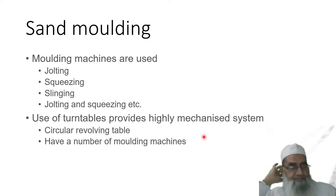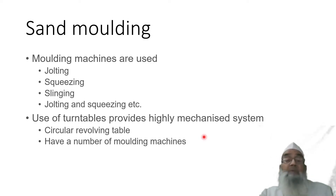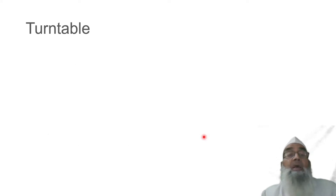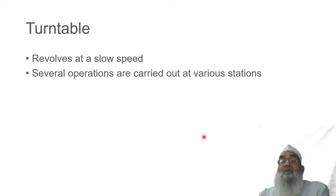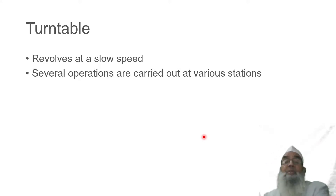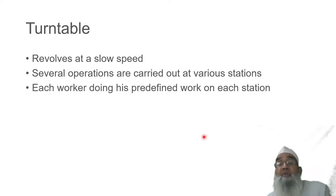The use of a turntable provides a highly mechanized system. A turntable is a circular revolving table with a number of moulding machines. The turntable revolves at a slow speed and several operators carry out various predefined operations at each station.